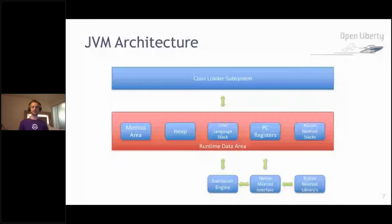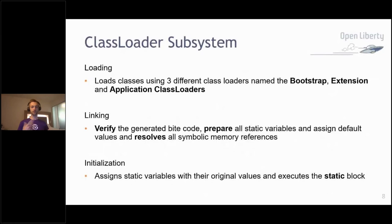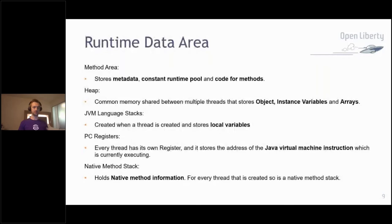The JVM has a class loader subsystem, a runtime data area, and an execution area. The class loader subsystem is responsible for loading, linking, and initialization. The loading part loads classes using three different class loaders: bootstrap, extension, and application. Linking verifies the generated bytecode, prepares static variables with default values, and resolves symbolic memory references. Initialization assigns static variables their original values and executes the static block.